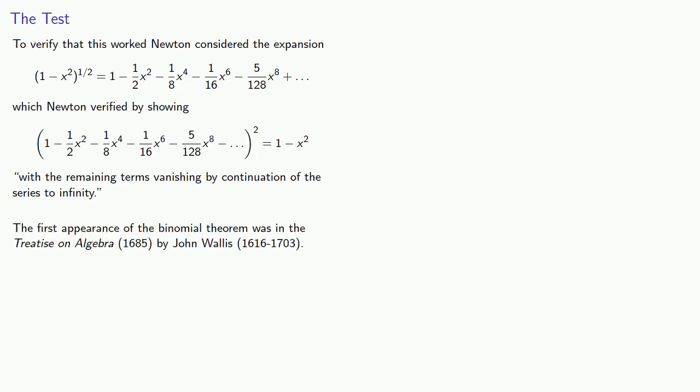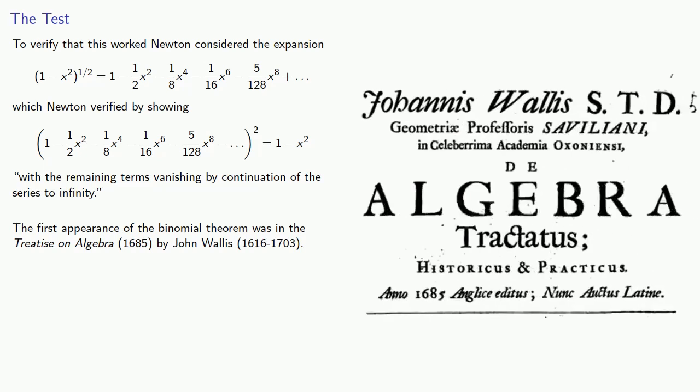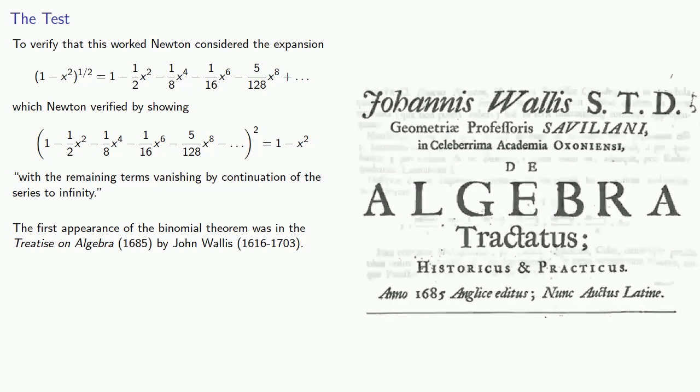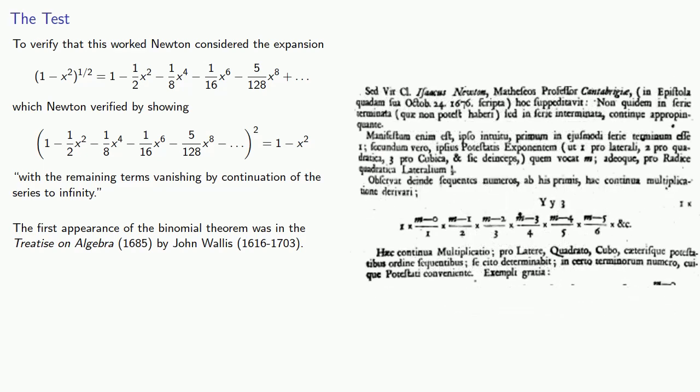Now remember, Newton communicated these results by letter in 1676, and so the first actual appearance of the binomial theorem was in the treatise on algebra 1685 by John Wallace. Where Wallace includes Newton's result...